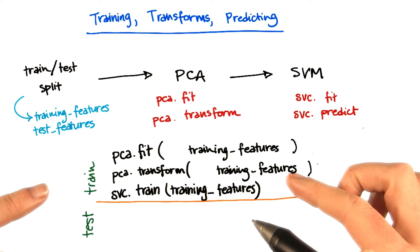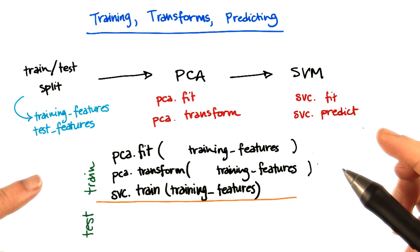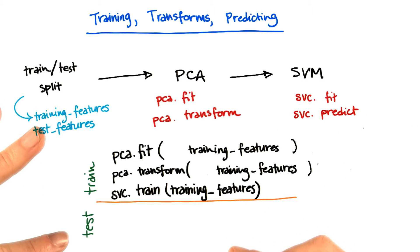So at this point, the training of my support vector classifier is done, including the principal components transformation. Now I want to move on to testing.